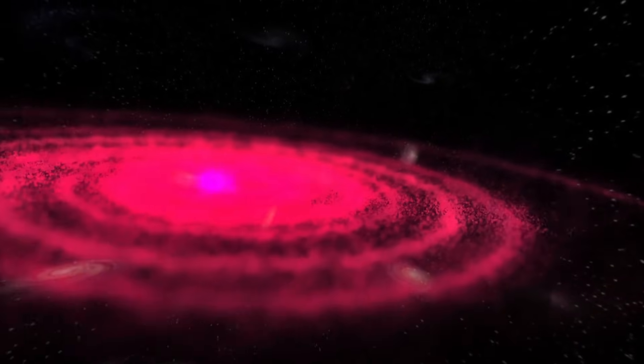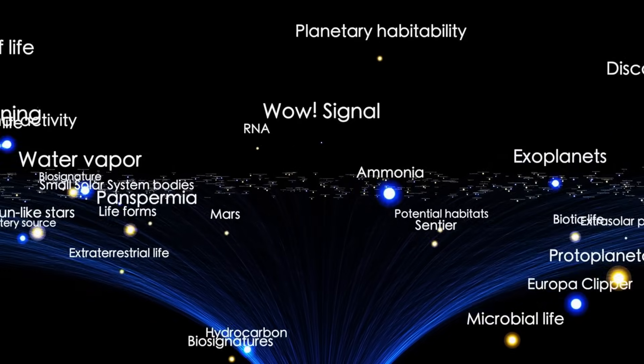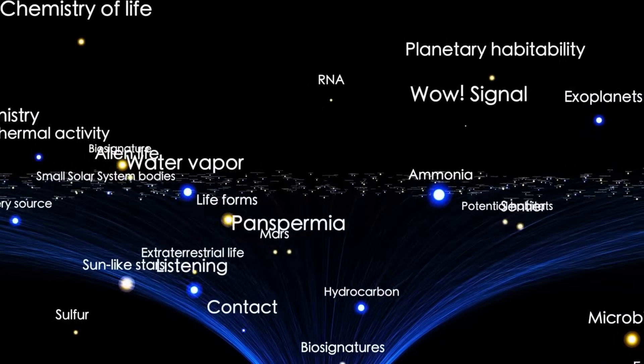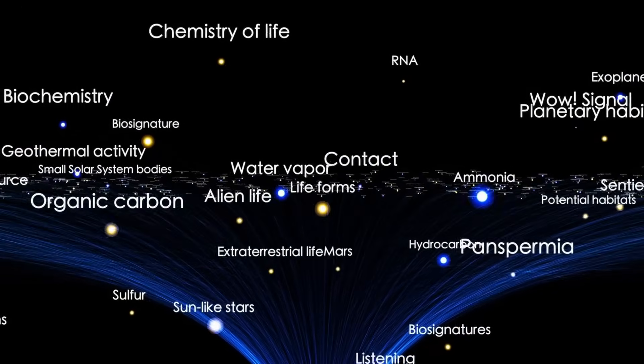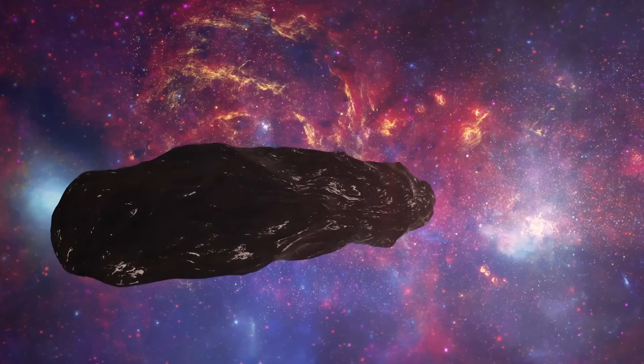All of this raised a serious question. If this isn't behaving like a normal comet, is it even a comet at all? Or is it something else? A machine, a fragment, something made? The shape of the plume, the direction, the chemistry. It didn't just look unusual. It looked intentional.